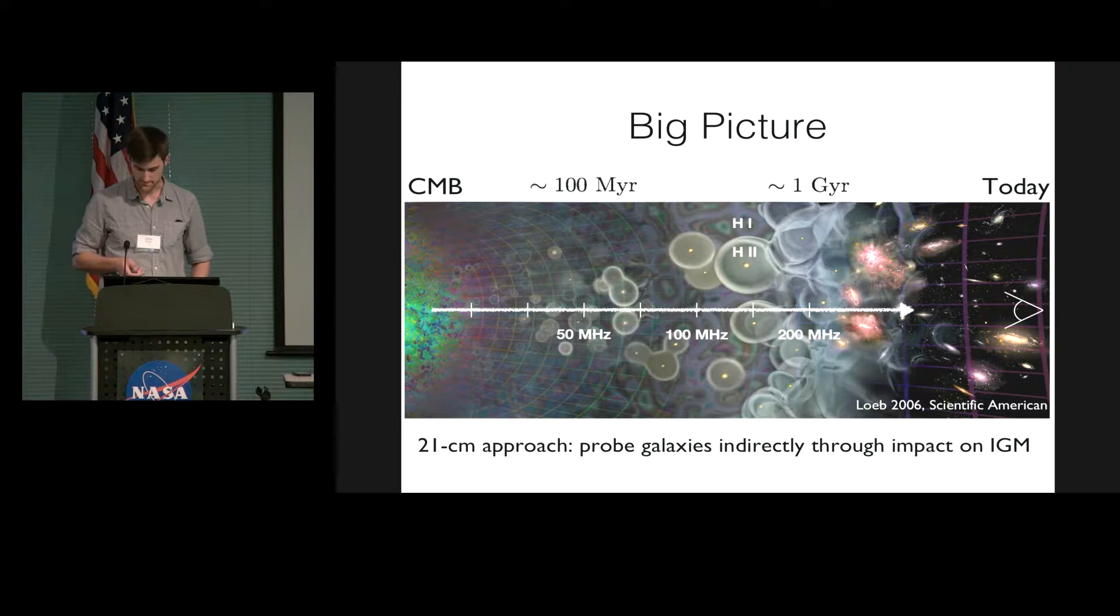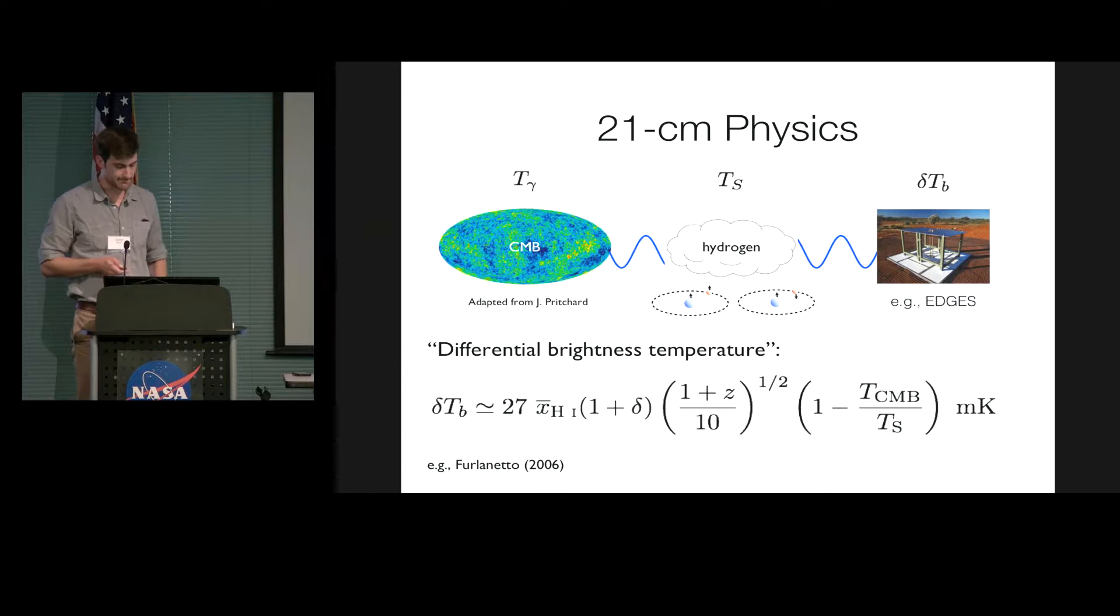So to cartoonify that cartoon even further, it's basically, we have some telescope on the ground, which is shown here at the right, and it's looking along sight lines to the microwave background, and in between us and the microwave background are clouds of neutral hydrogen gas, and those atoms have some level populations in the ground state that determine how bright of an absorption or emission signal we see.